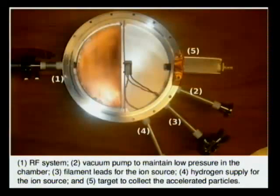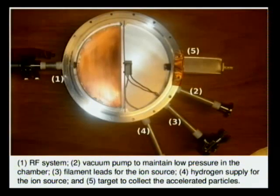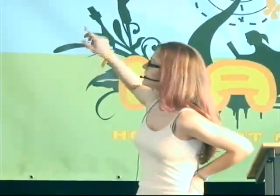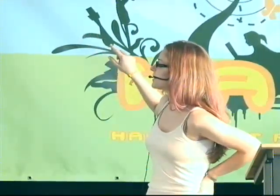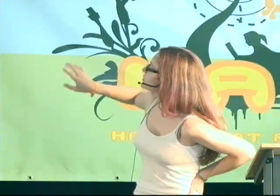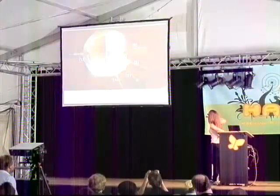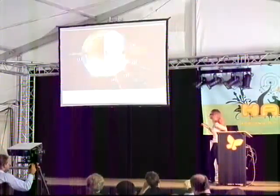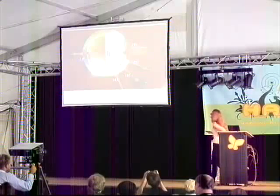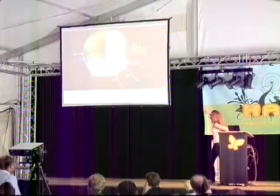Now, just an introduction before we go into the physics equations: this is the vacuum chamber of the cyclotron that I built. There are numbered ports on the side. There's the RF system with the impedance matching at Port 1, then a vacuum pump to maintain the low pressure. Ports 3 and 4 relate to the ion source — you have the electrodes for that, and also a hydrogen stream for generating the protons. And then Port 5 up there is a target to collect the accelerated particles.